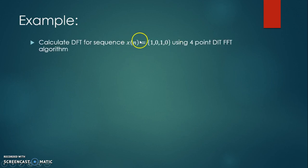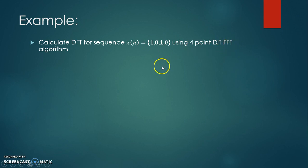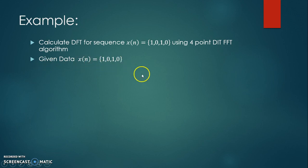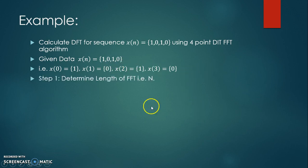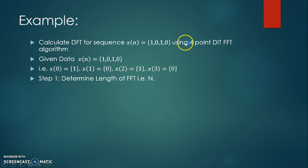The given example is x(n) = {1, 0, 1, 0}, and we have to determine the FFT of this sequence by using a four-point DIT-FFT algorithm. So x(0) = 1, x(1) = 0, x(2) = 1, and x(3) = 0. In step one, we determine the length of FFT, capital N. As given, we have to determine the four-point DIT-FFT, so N = 4.